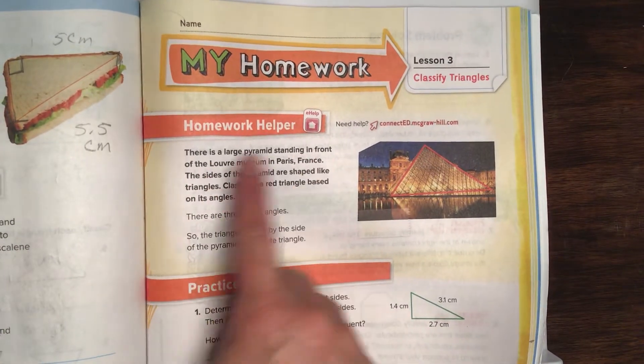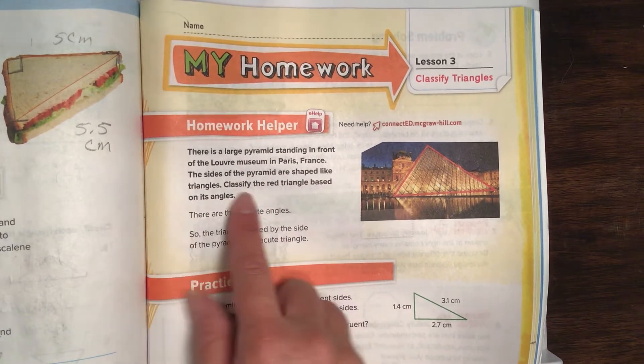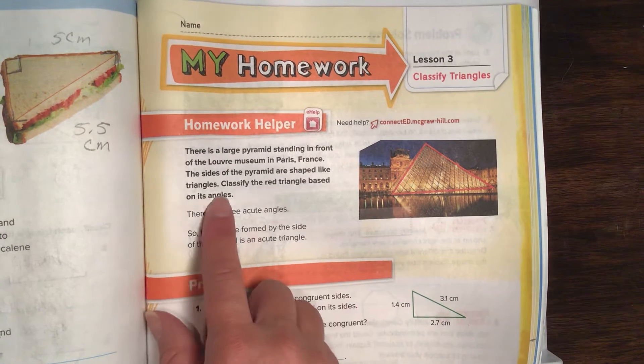There is a large pyramid standing in front of the Louvre Museum in Paris, France. The sides of the pyramid are shaped like triangles. Classify the red triangle based on its angles.